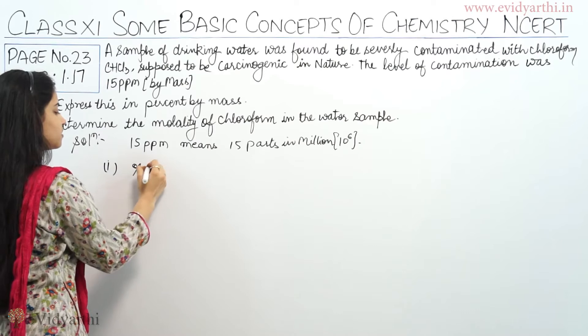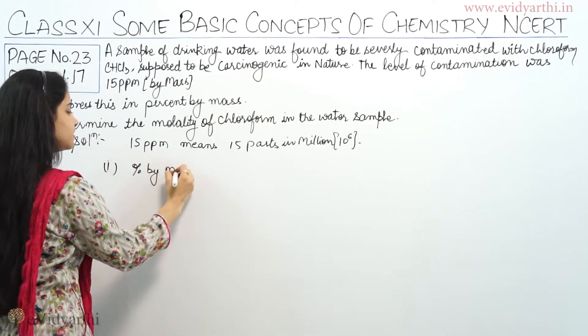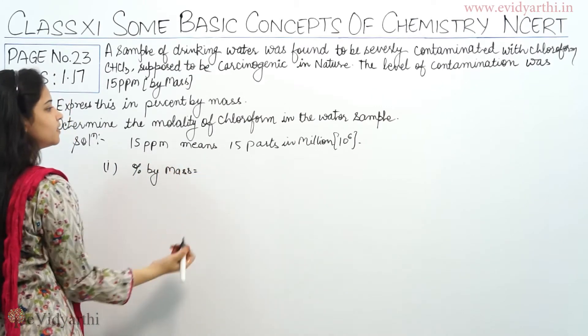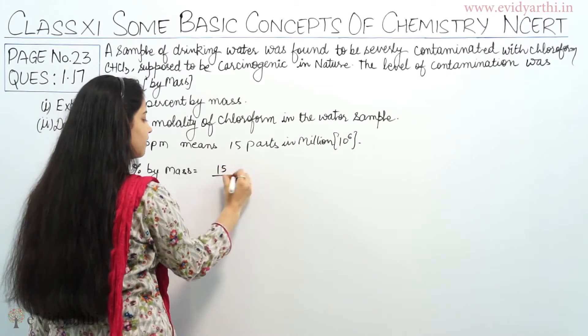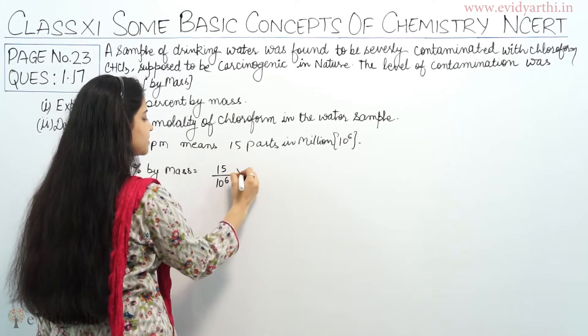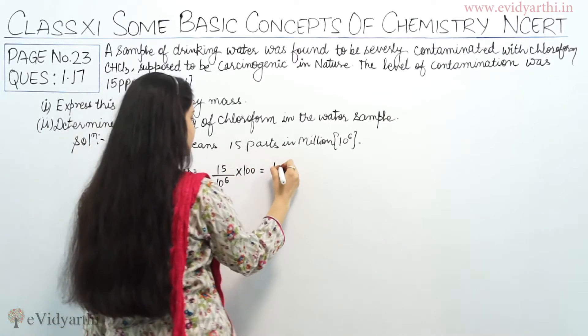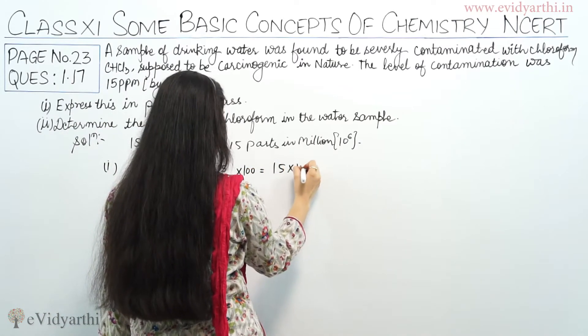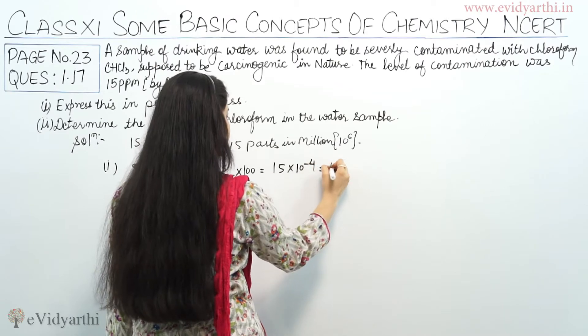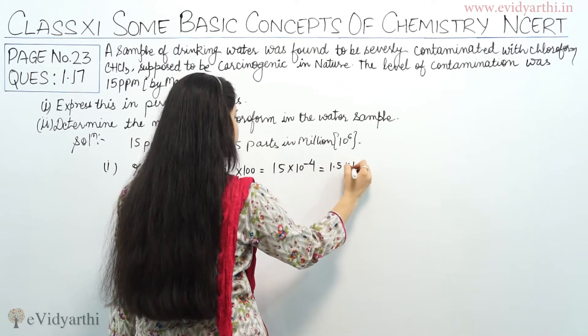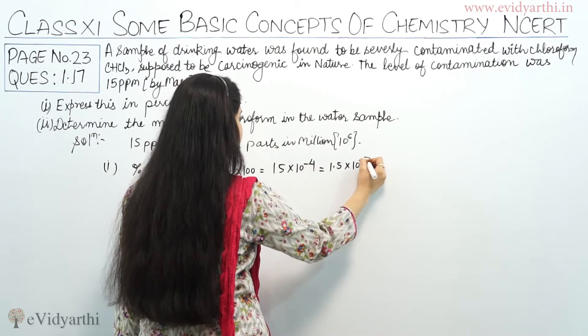So percentage by mass is equals to 15 divided by 10 raised to power 6 into 100, which equals 15 into 10 raised to power minus 4, which equals 1.5 into 10 raised to power minus 3.